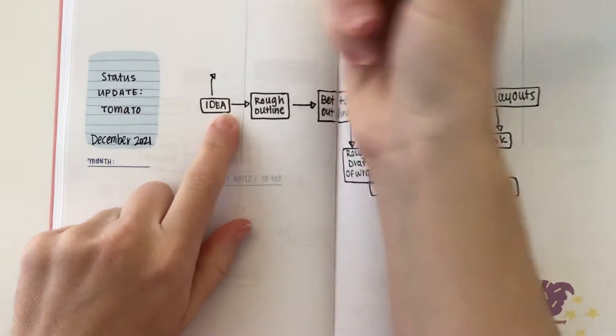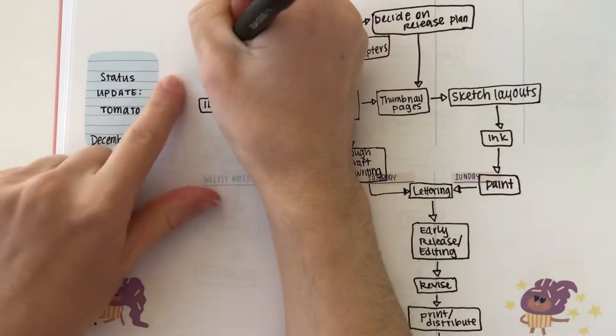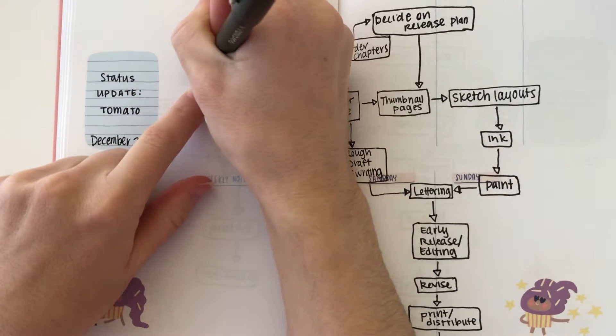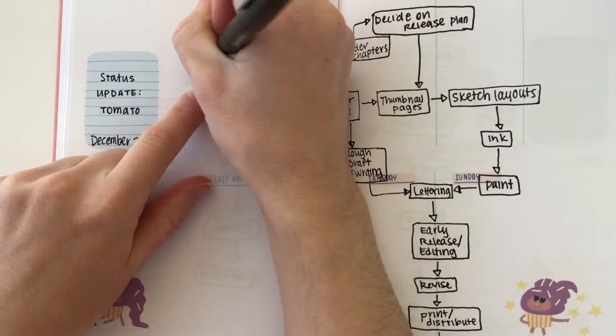So I think I forgot a step, which is I participated in the sketchbook project, so I drafted a chapter. We're gonna create that box.